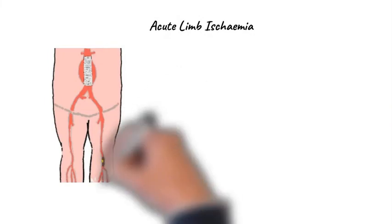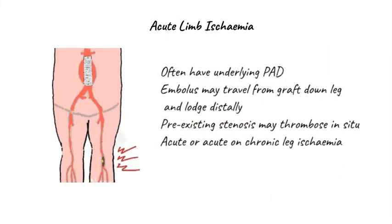Open AAA patients often have underlying symptomatic or asymptomatic peripheral arterial disease, so they are at increased risk of acute limb ischemia. They may develop an embolus which can travel from the aortic graft down the leg and lodge distally, or a pre-existing stenosis may thrombose in situ. The result can be acute or acute-on-chronic leg ischemia in the hours after the initial operation, and unless recognized and dealt with promptly, the result can be limb loss.